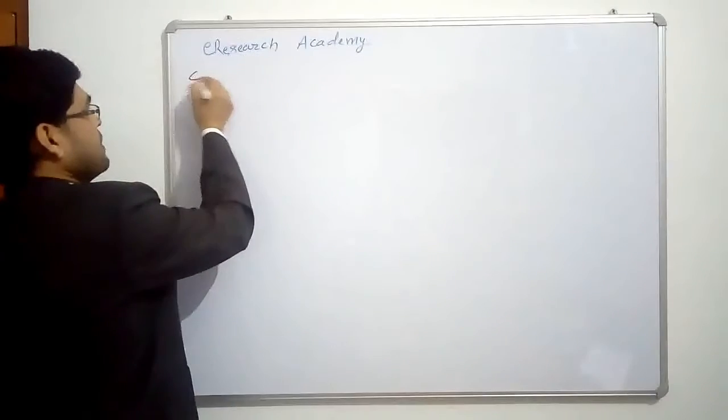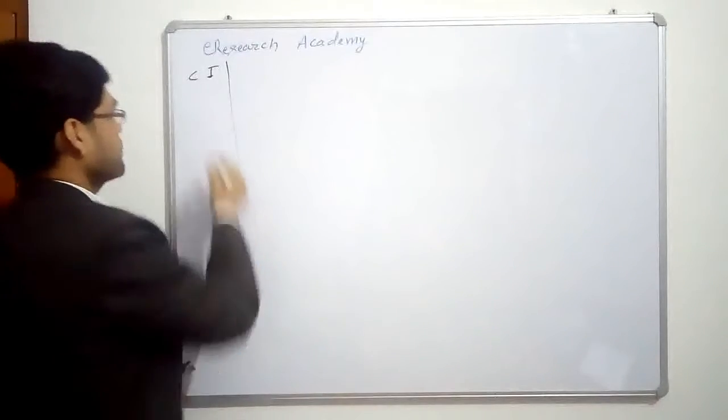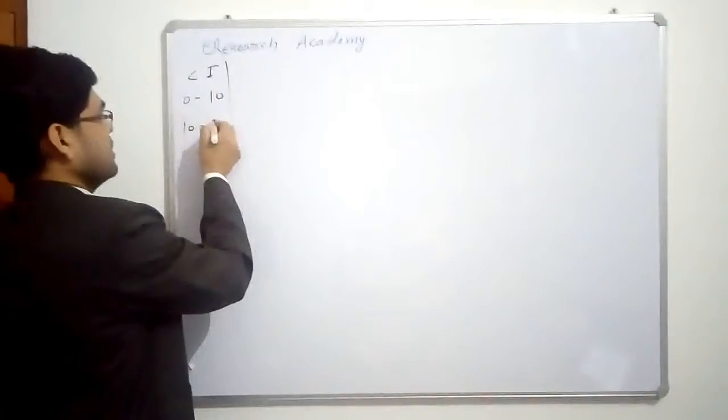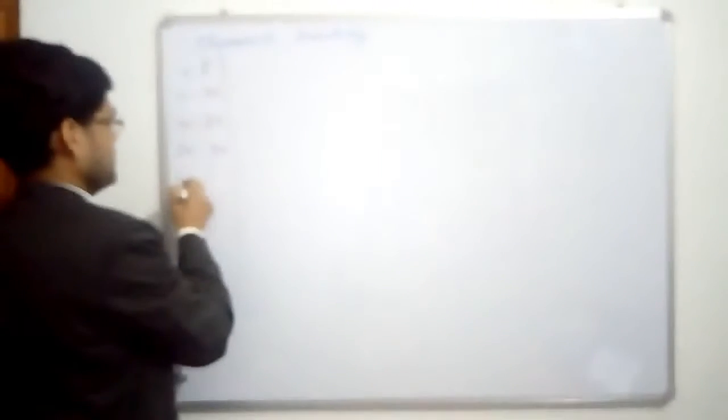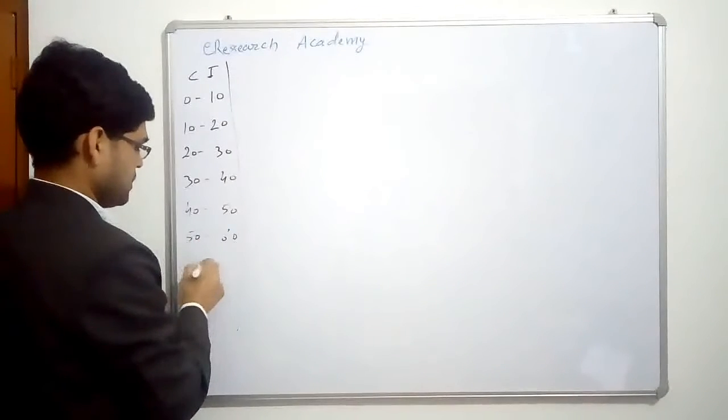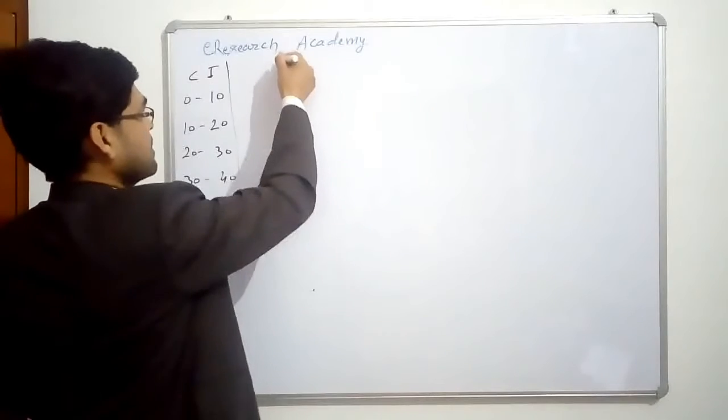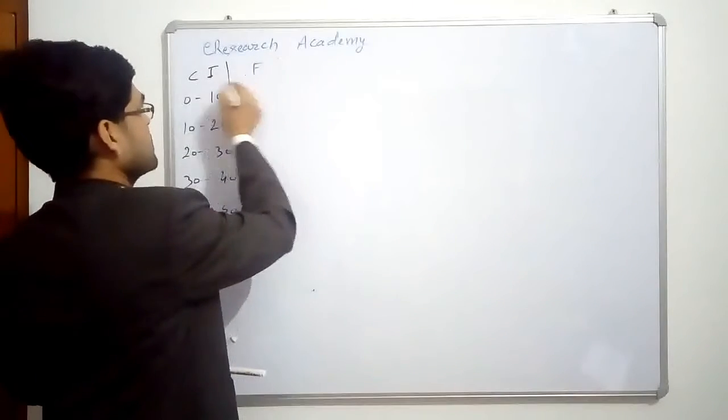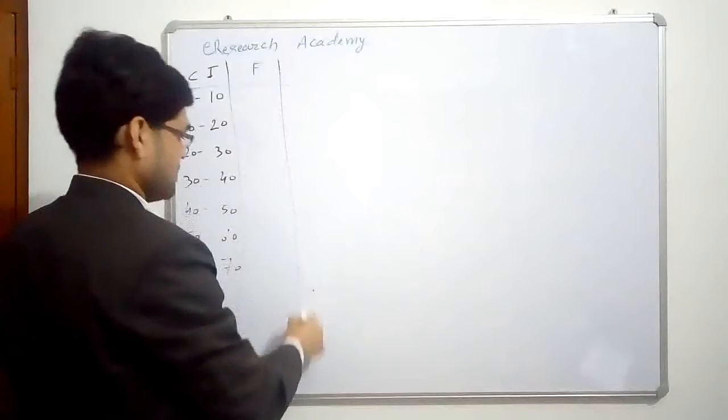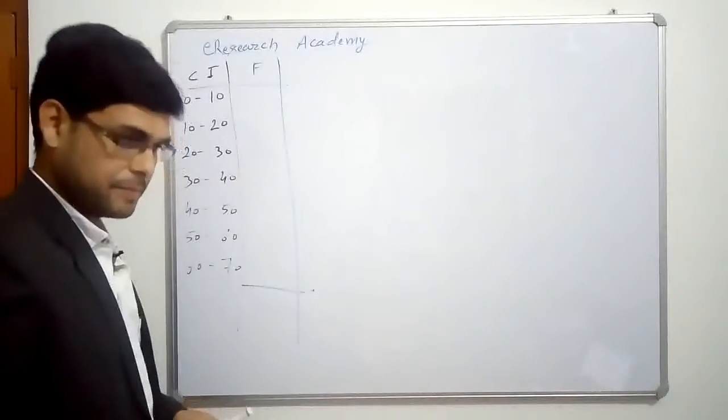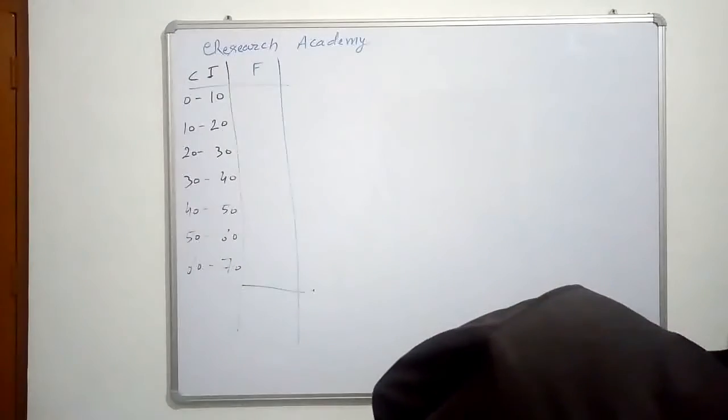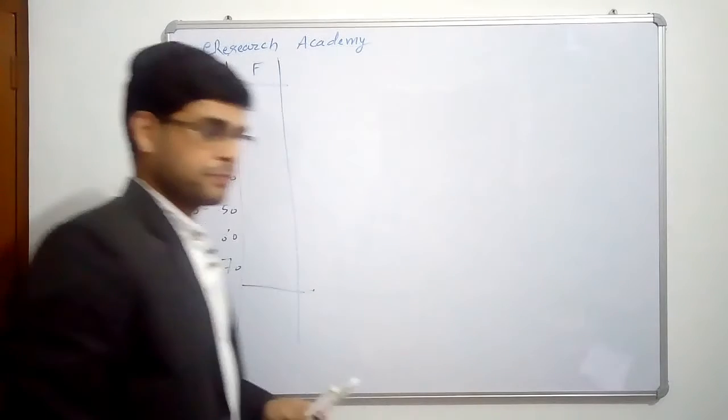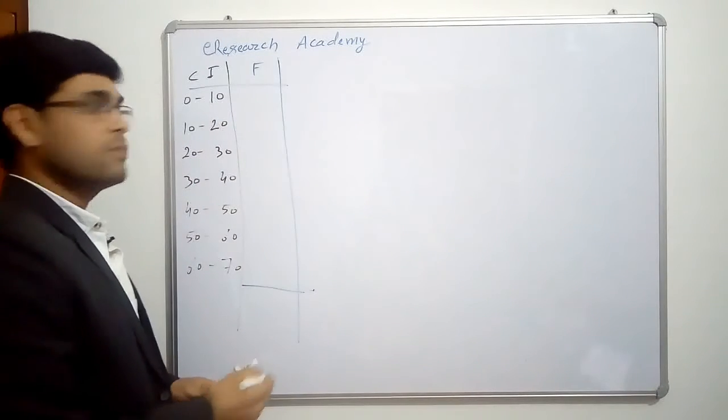The first column we are having is the CI, class interval. This is from 0 to 10, 10 to 20, 20 to 30, 30 to 40, 40 to 50, 50 to 60, and 60 to 70. These are our class intervals. Next column we have frequency.